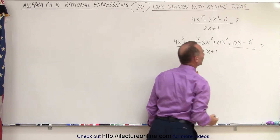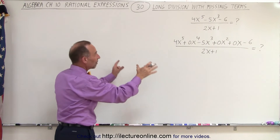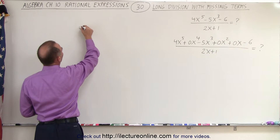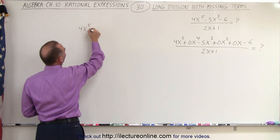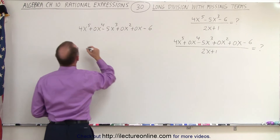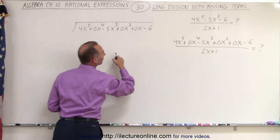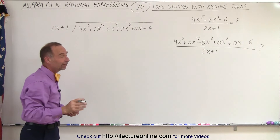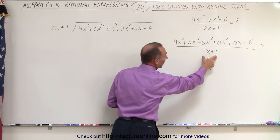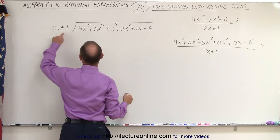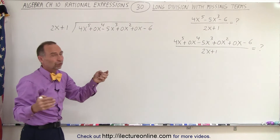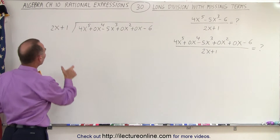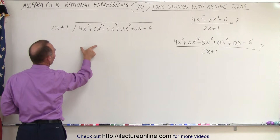And then we divide the whole thing by 2x plus 1. That's what we're looking for, and now we're going to take this and put it in the form so we can do long-hand division. Also, if we didn't have all the terms in the denominator — if this was 2x squared — then we would have to add the 0x to the 1st term, but in this case we don't have to do it for the denominator. Since we have two terms here, we're going to use two terms at a time.